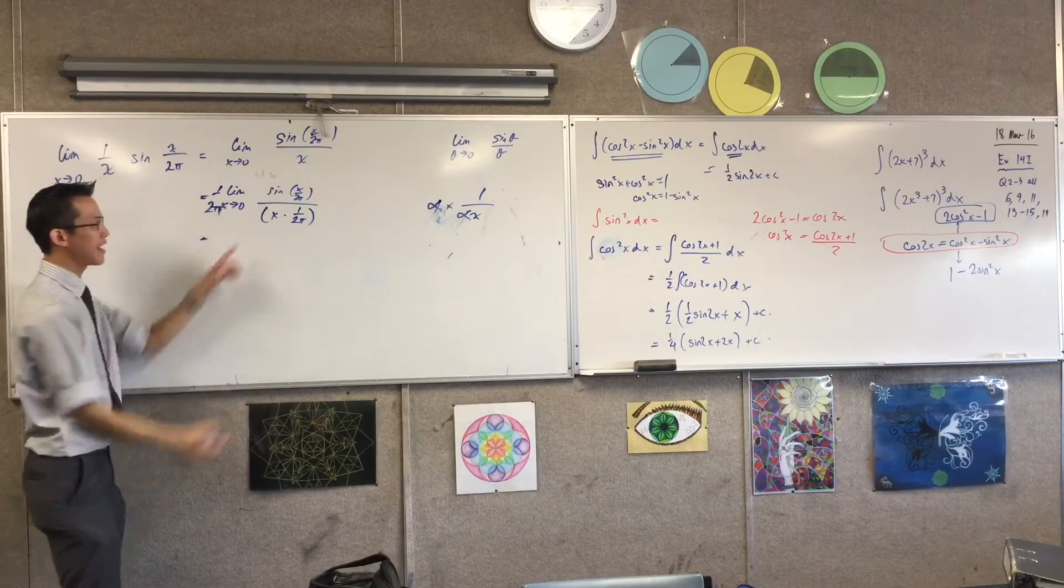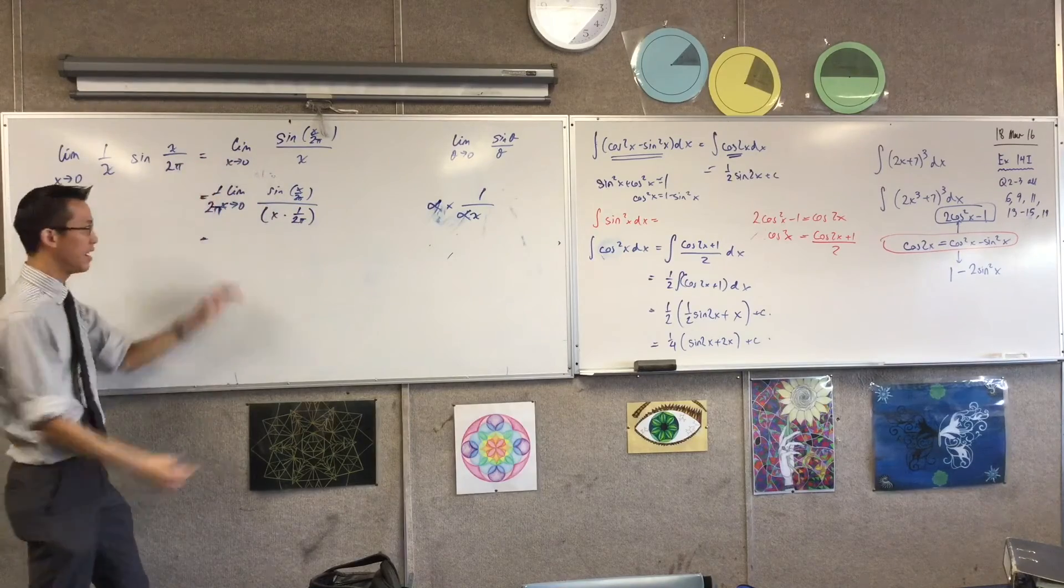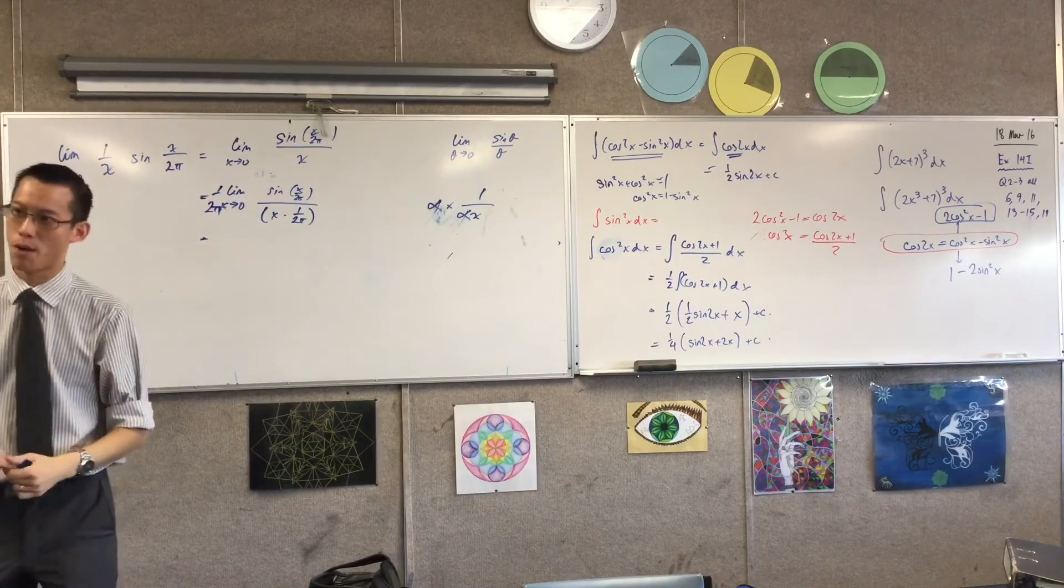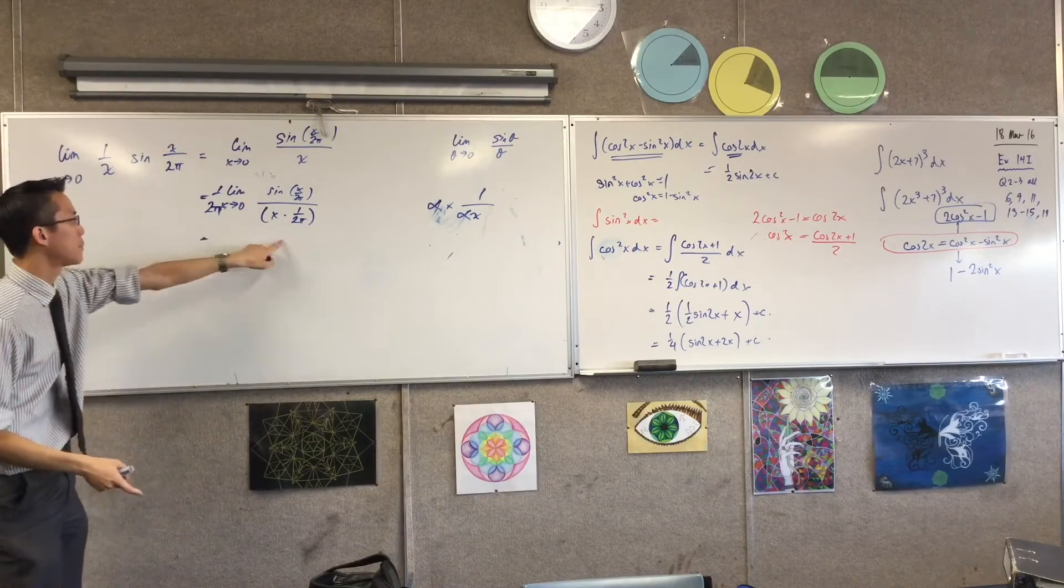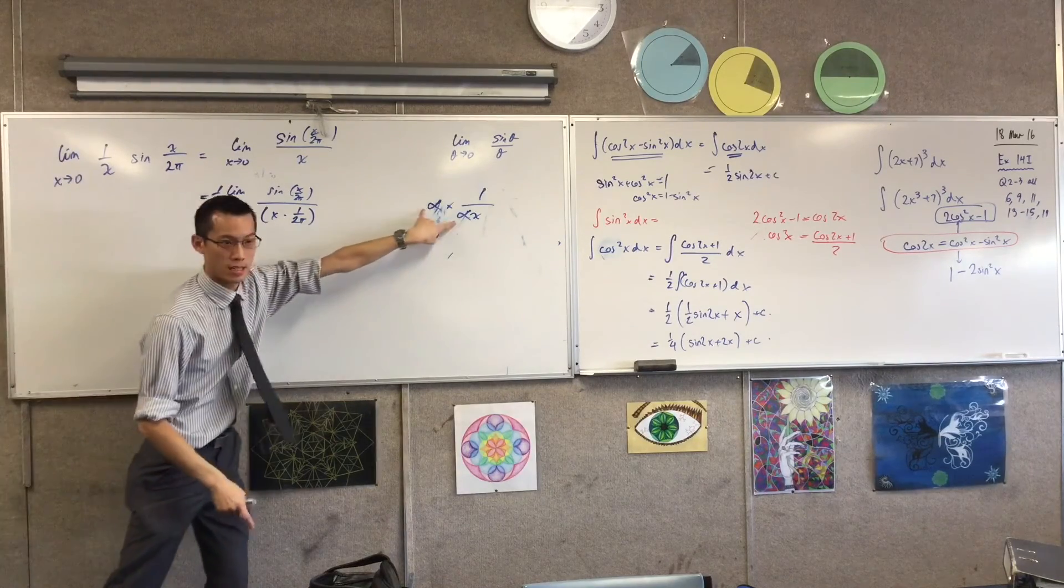This is not 2 pi here because that's a 2 pi on the denominator. It's not a 2 pi on the denominator. It's a 1 over 2 pi on the denominator. So to compensate, the exact same number comes out the front, just like it did here.